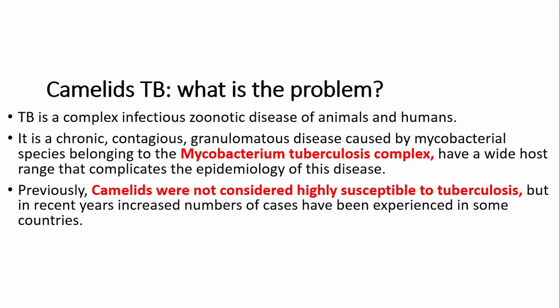Camelidae TB — what is the problem? TB is a complex infectious zoonotic disease of animals and humans; it is a chronic contagious granulomatous disease caused by mycobacterial species belonging to the Mycobacterium tuberculosis complex. It has a wide host range that complicates the epidemiology. Previously there was a belief that camels are resistant to most diseases, but this is not true — camels are simply out of reach of veterinary services. In recent years, an increased number of TB cases have been reported in some countries.